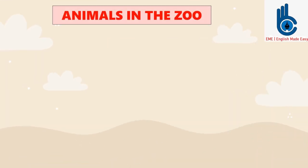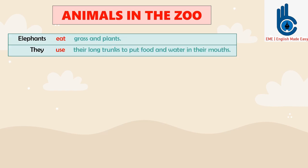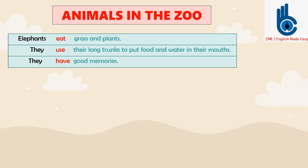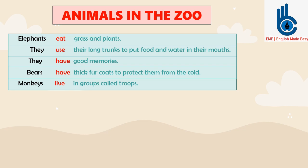In the previous dialogue, they are talking to each other about animals in the zoo. Elephants eat grass and plants. They use their long trunks to put food and water in their mouths. They have good memories. Bears have thick fur coats to protect them from the cold. Monkeys live in groups called troops.